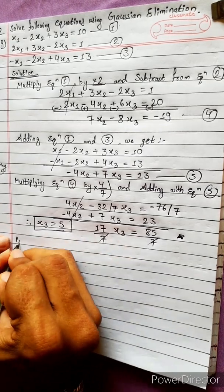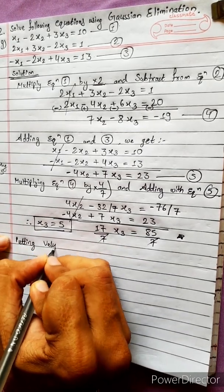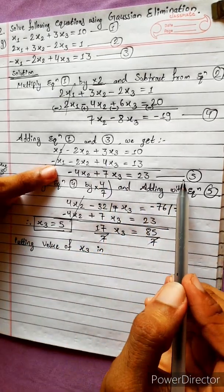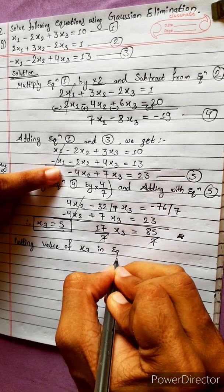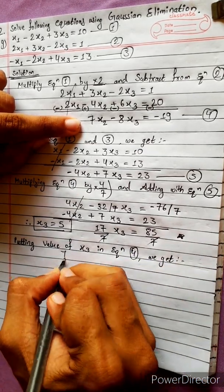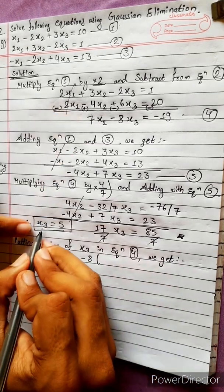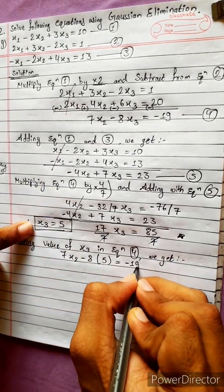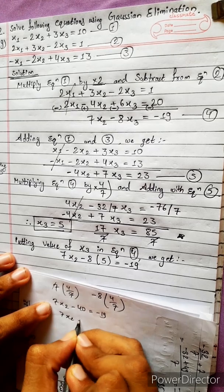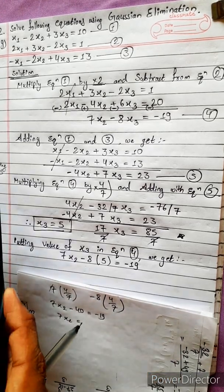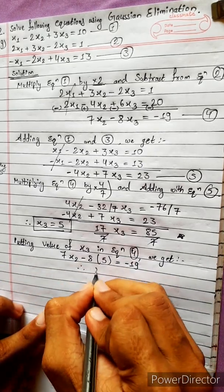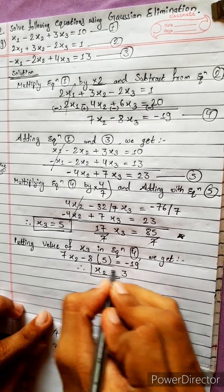We got x3 = 5. Now putting the value of x3 into equation 4: 7x2 - 8×5 = -19, so 7x2 - 40 = -19, giving 7x2 = 21, therefore x2 = 3. We got this value also.